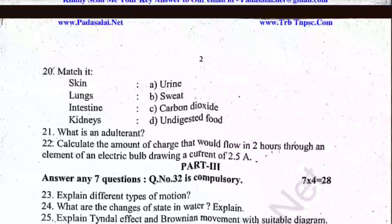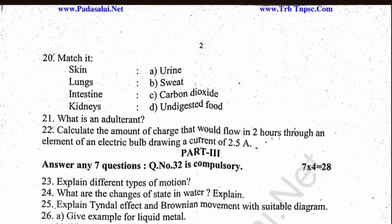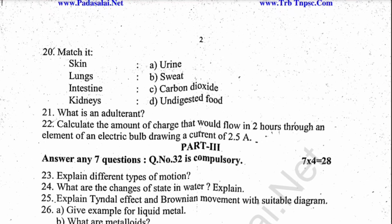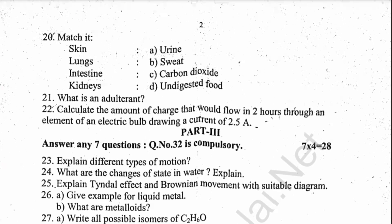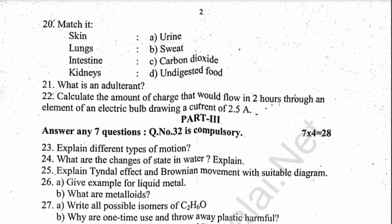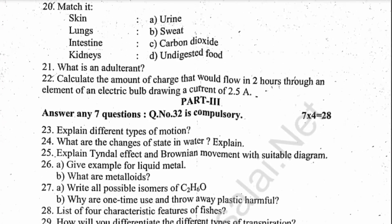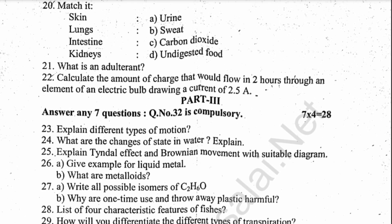Question 27: Four characteristic features of fishes. Differentiate the different types of transpiration. Alimentary canal of man, medicinal importance of honey, need for standard units, and how to measure the least count of a vernier caliper.